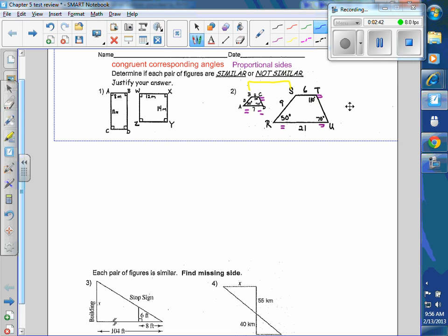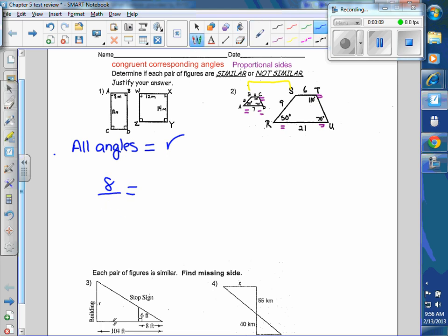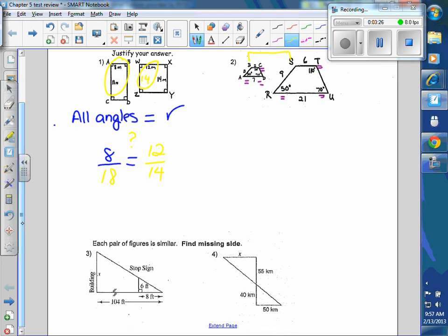Those are the key things for similarity: congruent corresponding angles and proportional sides. So when you do a problem like this first one, we know angles are all equal. So yes, that part's done. But we have to compare 8 to 12, or you could think 8 to 18. And since this is a rectangle, this is 14 over here. You're comparing it to 12 over 14, and you're asking yourself, are these congruent or proportional? Do they make congruent ratios?